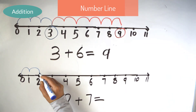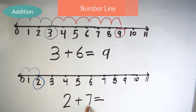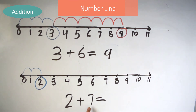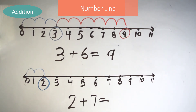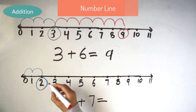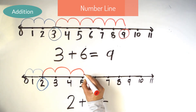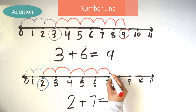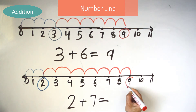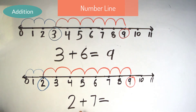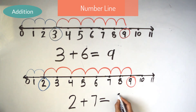1, 2. Now let's add 7 more on our number line. So let's jump 7 more times. 1, 2, 3, 4, 5, 6, 7. 2 plus 7 equals 9.